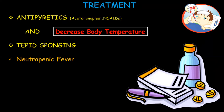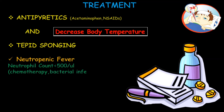Febrile neutropenia is a condition when the neutrophil count is less than or equal to 500 per microliter. This increases the risk of severe bacterial infection.